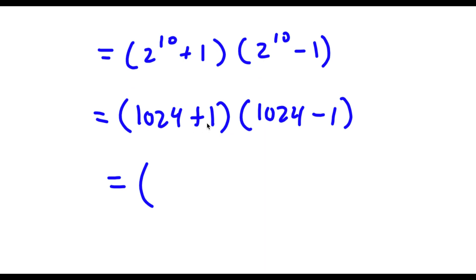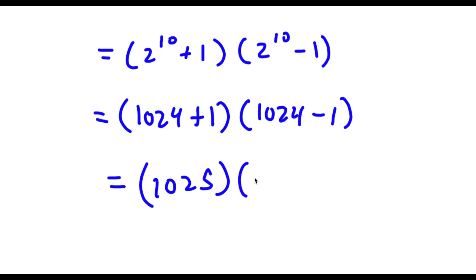1,024 plus 1 is going to be equal to 1,025, and 1,024 minus 1 is equal to 1,023. So now I'm left with 1,025 times 1,023.